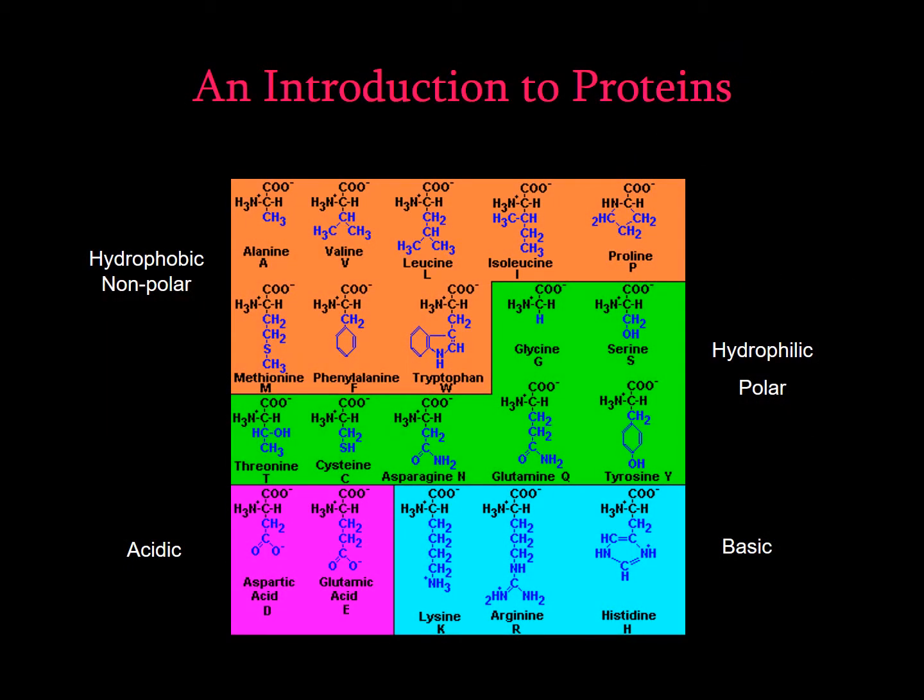Proteins are comprised of amino acids. The amino acids have different properties: some of these amino acids are hydrophobic, some are hydrophilic, some are acidic, and others are basic. The composition of a protein determines the structure of the protein as well as its net charge, hydrophobicity, and hydrophilicity.